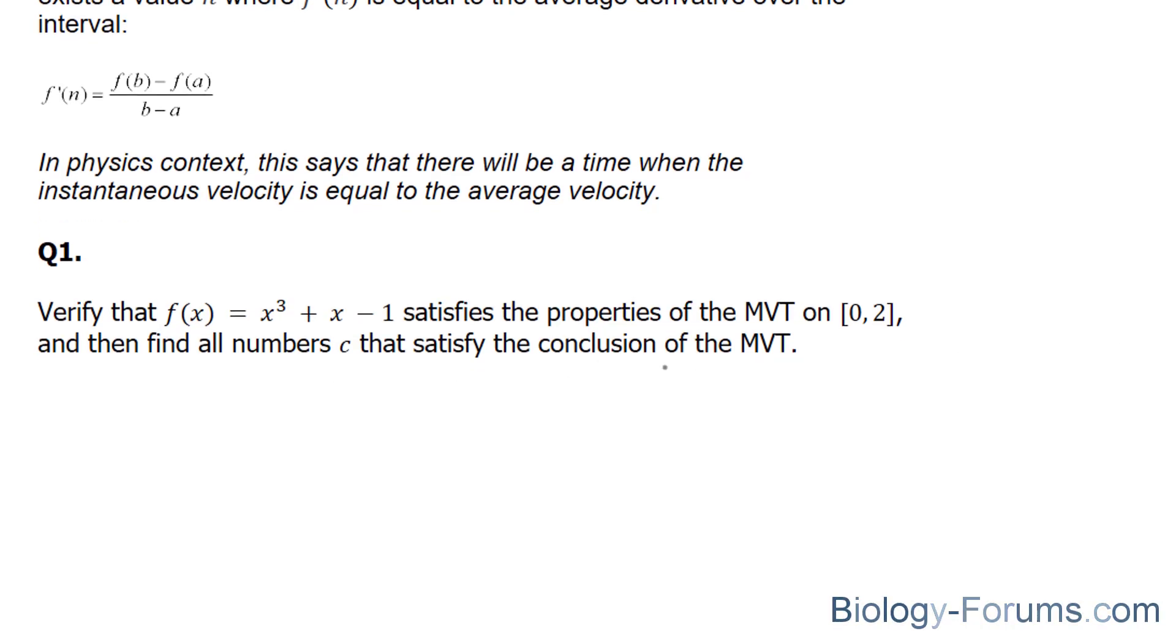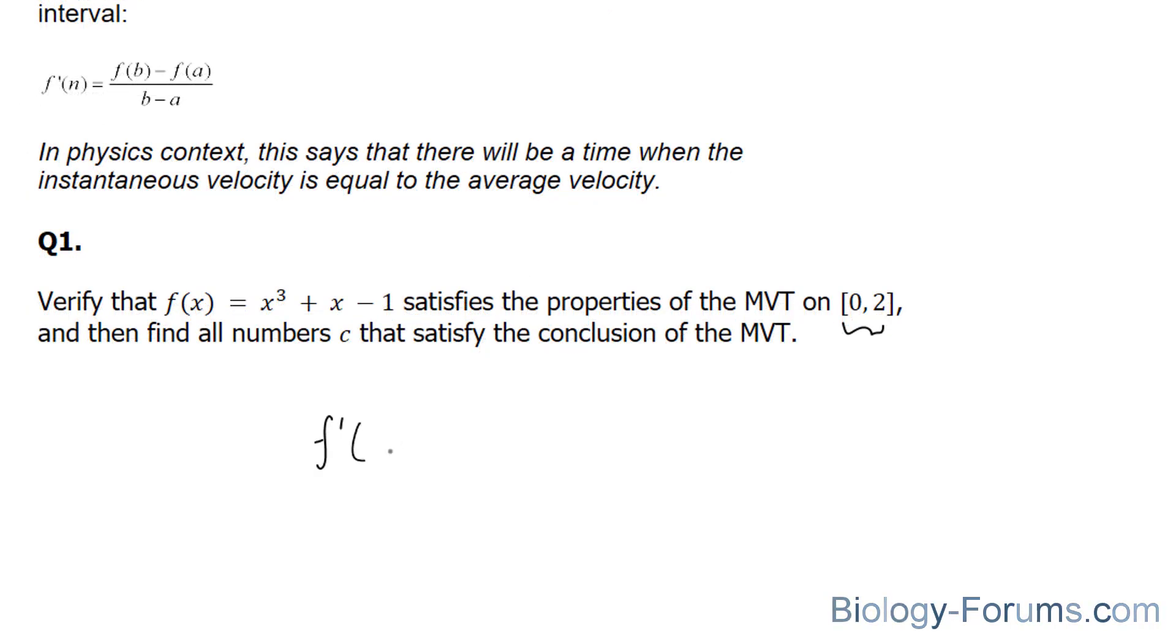Now, given f(x) is a polynomial, it is continuous and differentiable everywhere, including this interval. So let's start off by writing out f'(c), and let's use c instead of n as defined originally, equals f(b) - f(a) over b - a.